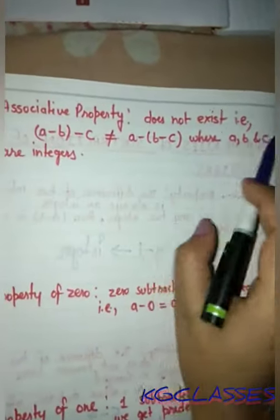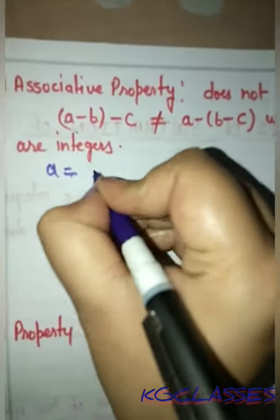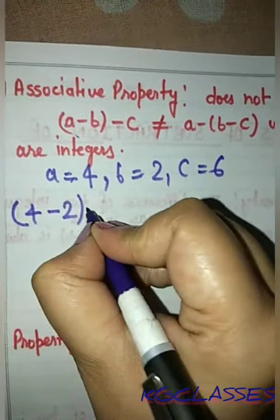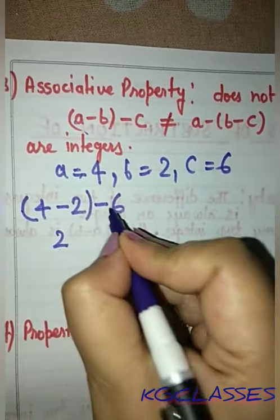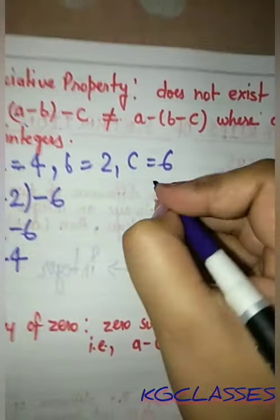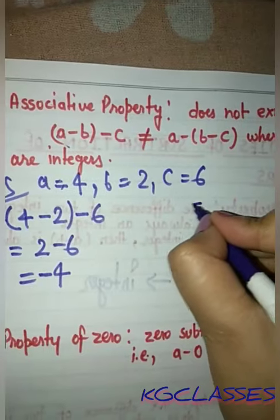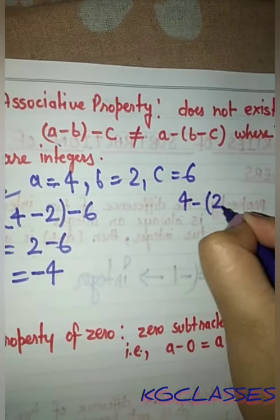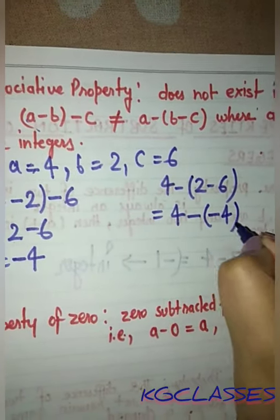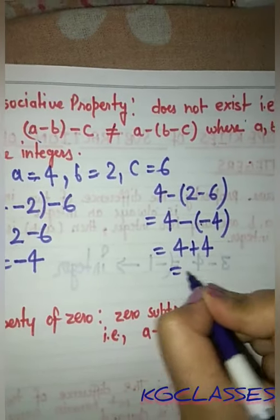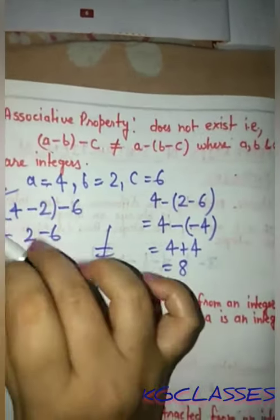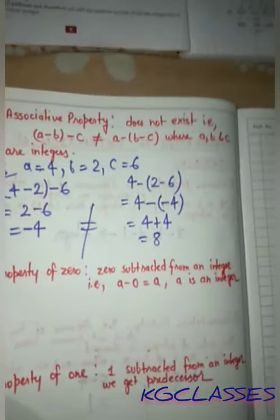The next property is associative property, which does not exist in subtraction. Let's see an example: let a equal 4, b equal 2, c equal 6. For the left-hand side, a minus b minus c gives 4 minus 2 minus 6, which equals minus 4. For the right-hand side, a minus b minus c grouped differently gives a different result. Since both sides are not equal, associative property does not exist in subtraction.